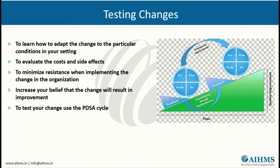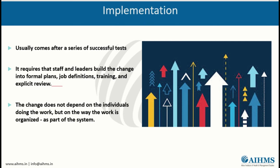Implementing a change is the hardest part. Implementation usually comes after a series of successful tests. It requires that staff and leaders integrate the change into formal plans, job definitions, training, and procedures, so that the change does not depend on the individuals doing the work but on the way the work is organized as part of the system. Hardwire the change into the system. The implementation phase is the most common area where process improvement fails.